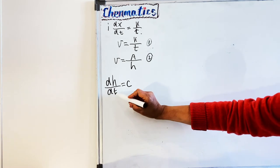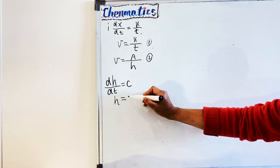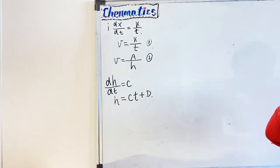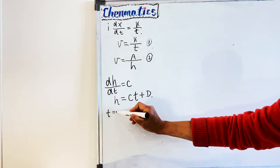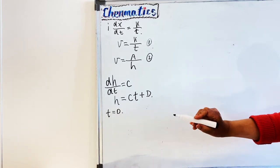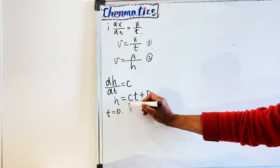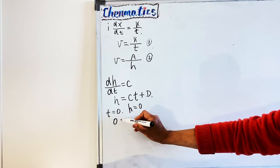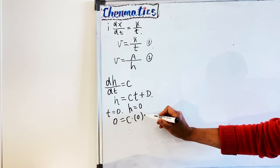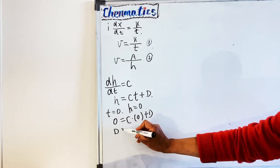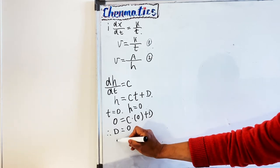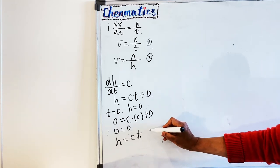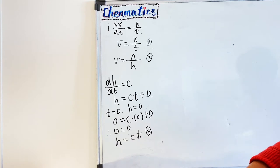Integrating both sides, we get h equals ct plus a new constant d. We know that initially when t equals zero — when the snow just starts — h equals zero. Substituting in: 0 equals c times 0 plus d, so d equals zero. Therefore h equals ct, and we call this equation 3.